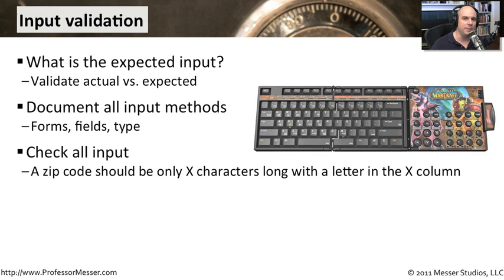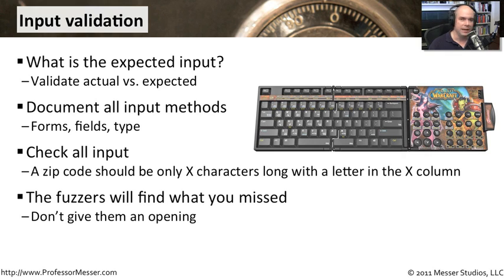If we have a field for a zip code, we know that zip code should only be a certain length. We know that in certain countries, there should only be certain characters, and they should only occur at the third or fourth character in the entire zip code. We should perform exactly all of those checks and leave nothing to chance, because if we end up having a validation problem, the bad guys may find a way into our application.